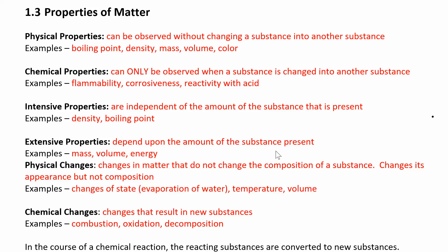Now we can look at some properties of matter. We have physical and chemical properties, and we can also break these down into intensive and extensive properties. A physical property is something you can observe without having to change a substance into another substance — things like color, volume, mass, and density. Density is mass over volume, and we'll look at that in the next section.